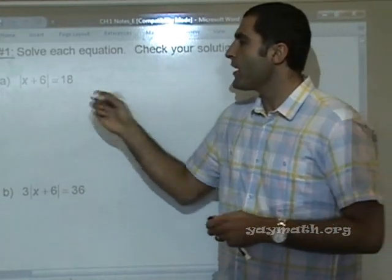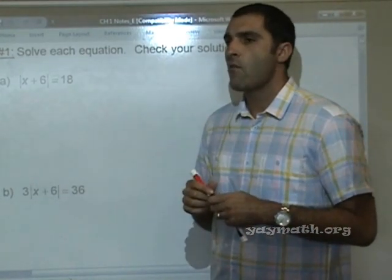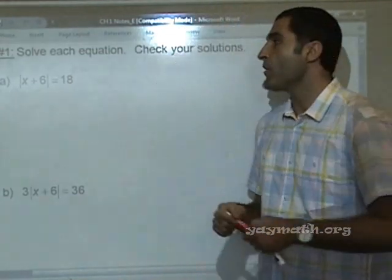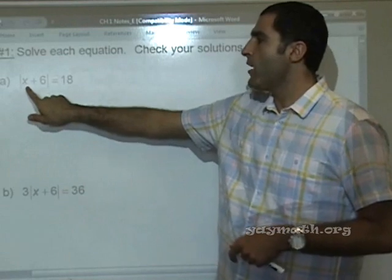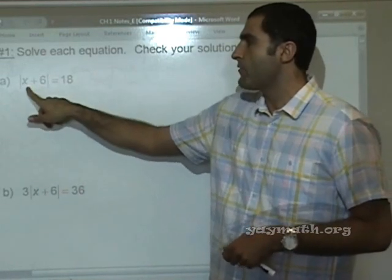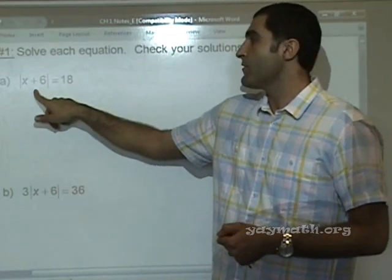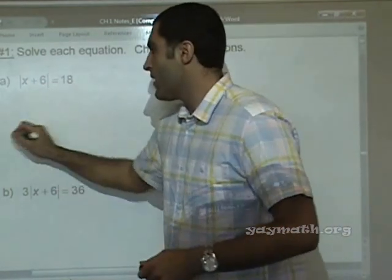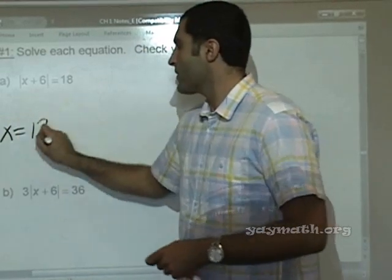So, can you think of a possible value for x that'll work here? Anyone? 12 would work. Let's try it. If x was 12, it would be 12 plus 6. Absolute value of 12 plus 6 is the absolute value of 18. Absolute value of 18 is 18. I'm actually going to write x equals 12 here.